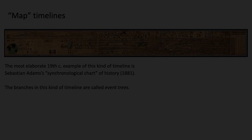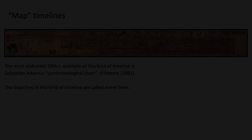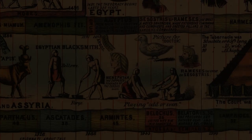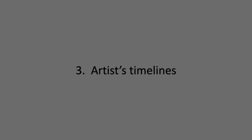This is the most elaborate 19th century example — Sebastian Adams' Synchronological Chart of History from 1881. There's a website where you can look at this in detail. You can see cultures branching and then continuing, so the metaphor is like roads or streams, sometimes called event trees in programming. Here's a tiny detail from the middle — right in the center there's a hieroglyphic picture supposedly meaning 'doctor.' Above and below it, the streams are Assyria at the bottom and Egypt at the top, flowing by.